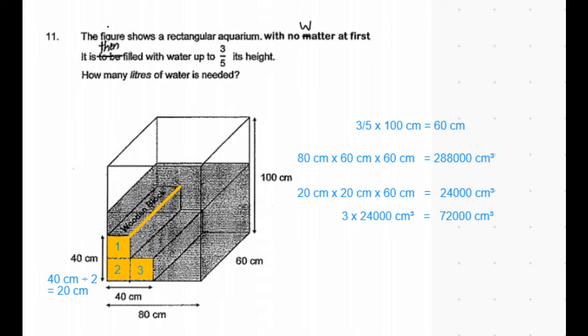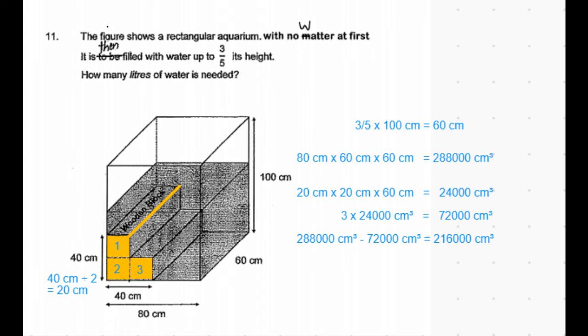So the volume of these three blocks has to be subtracted from 288,000 centimeter cube which is equal to 216,000 centimeter cube is the volume of water needed to fill until three-fifths of its height considering the three blocks placed inside the container.